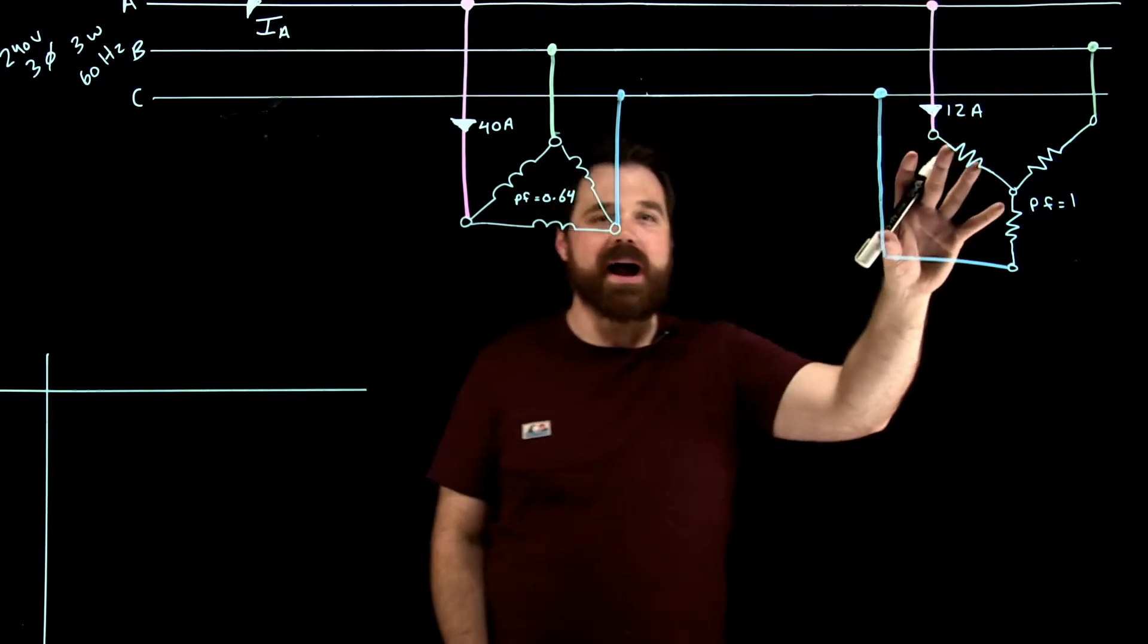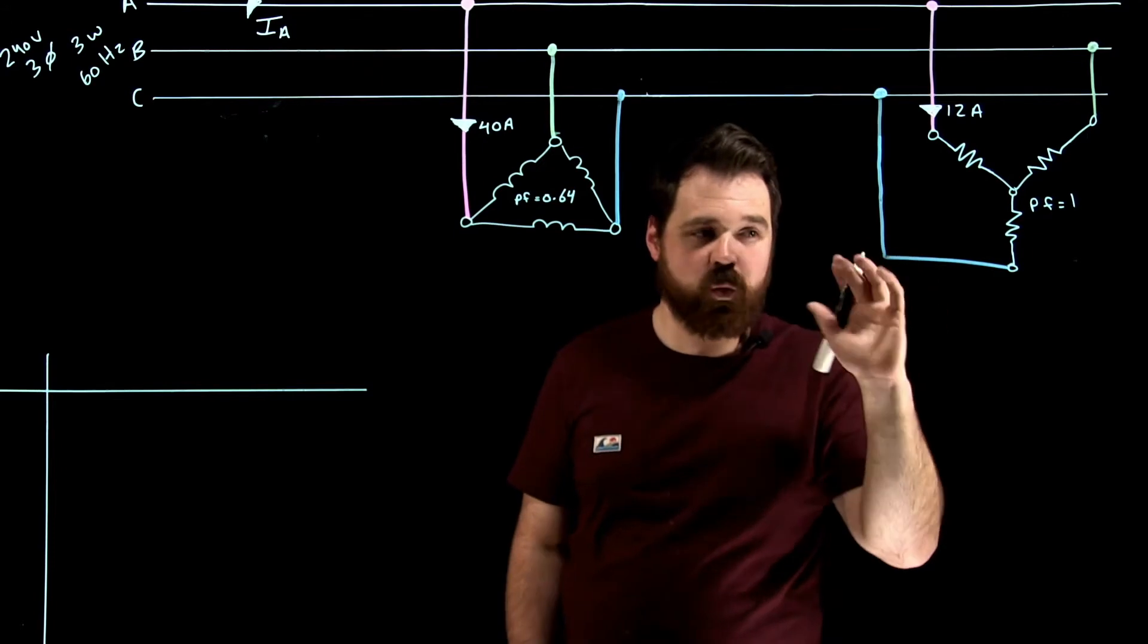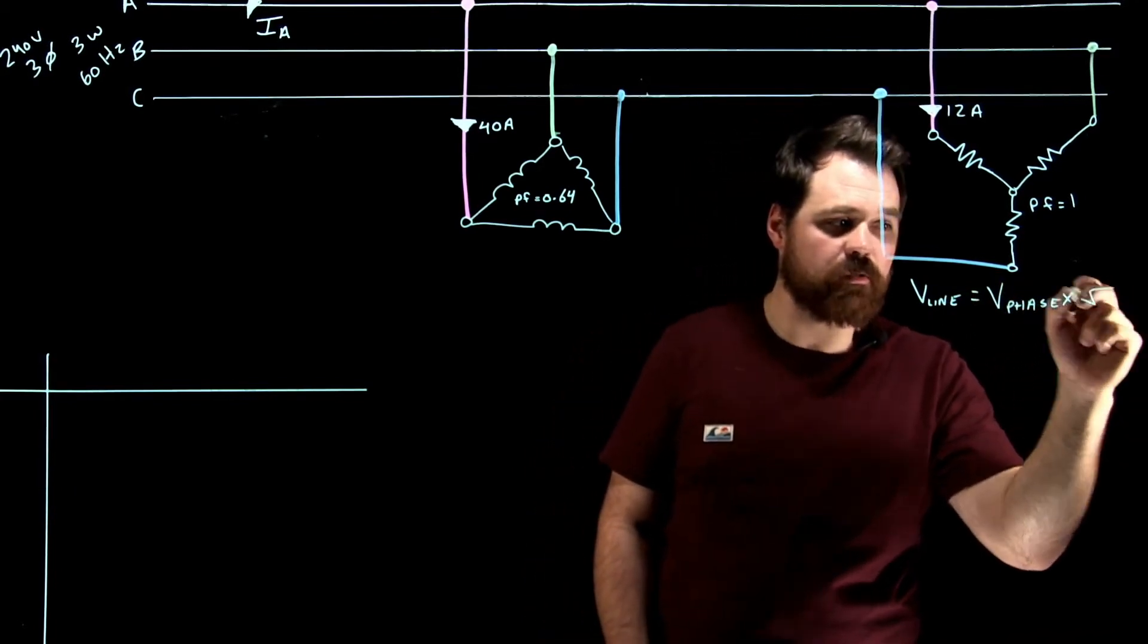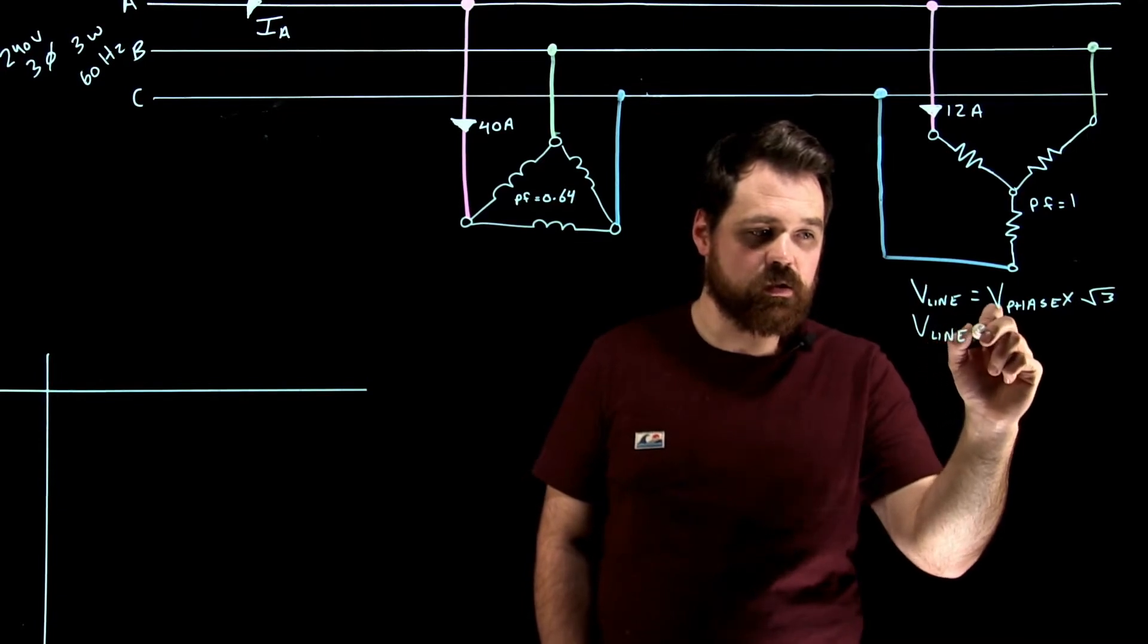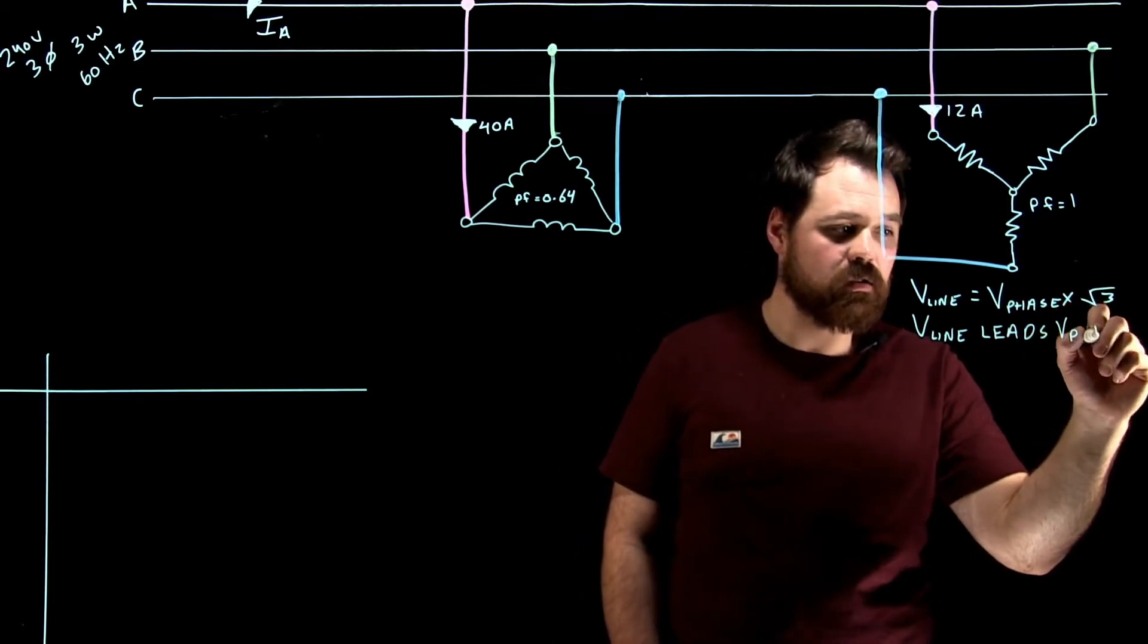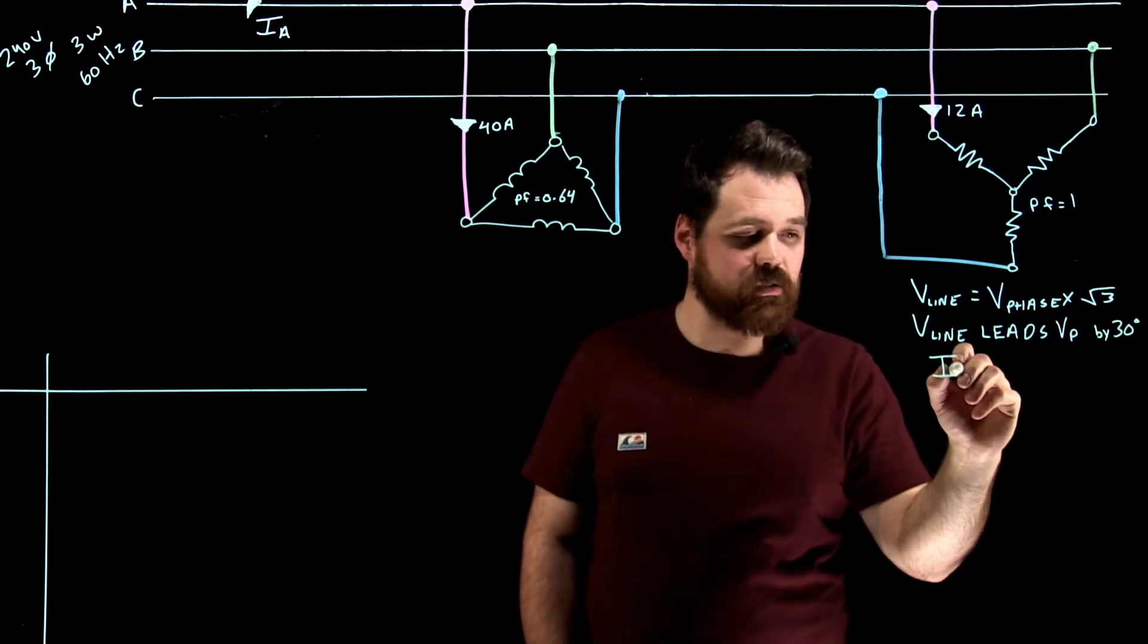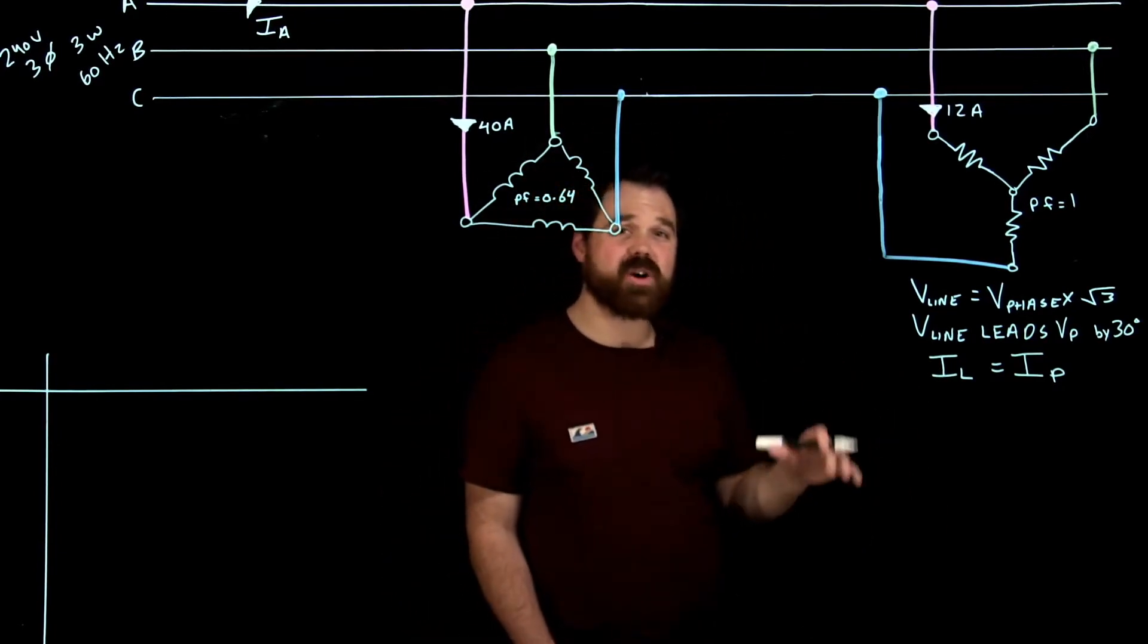So when I'm dealing with a Y load, I want to remember my Y rules. In Y, V line is equal to V phase times square root of three. The last rule that really matters, especially for what we're talking about today, is that I line equals I phase. So my phase current and my line current are exactly the same.